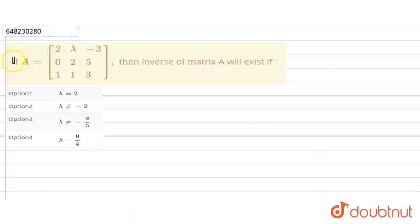Hello everyone, so the problem is that A is a matrix. Its inverse exists, so we need to find what will be the lambda value. Okay, so let's start the solution.